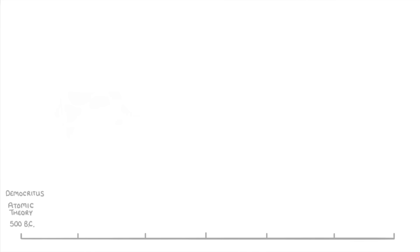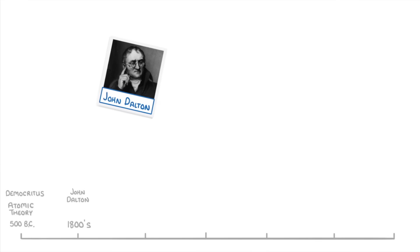It then took another 2,300 years, meaning the 1800s, before anyone really improved on his ideas. At this point, John Dalton described atoms as solid spheres, and importantly, he suggested that different types of spheres might make up the different elements.